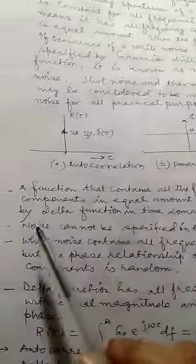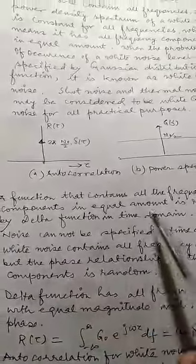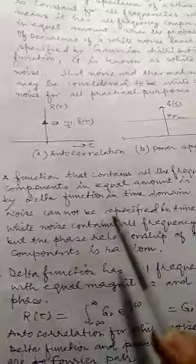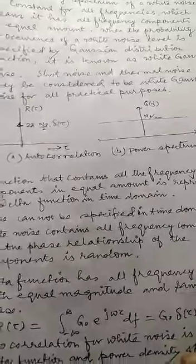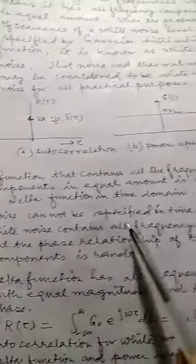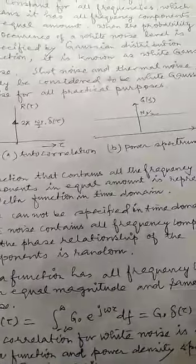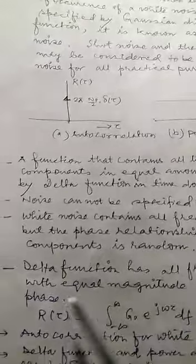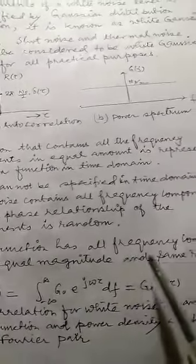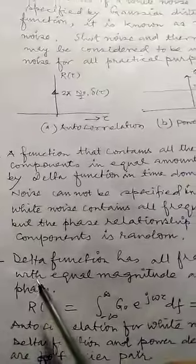...is represented by delta function in time domain. Noise cannot be specified in time domain. White noise contains all frequency components but the phase relationship of the components is random. Delta function has all frequency components with equal magnitude...